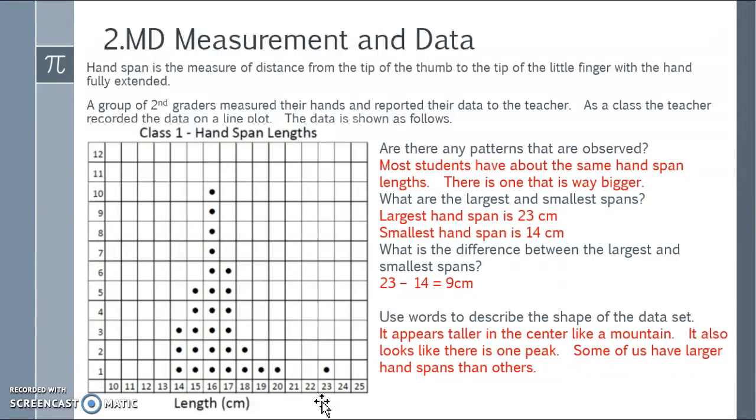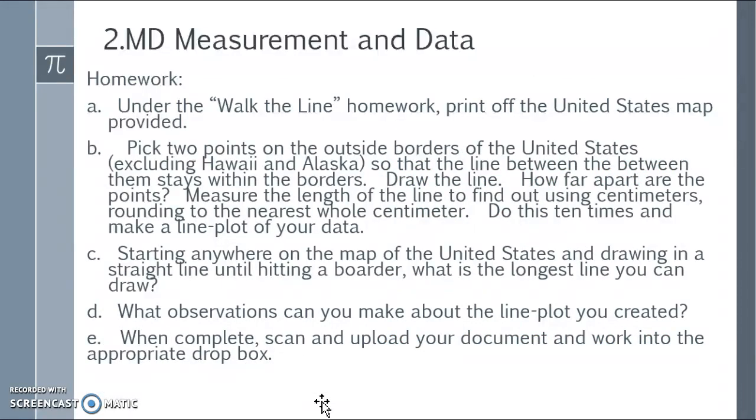Homework. Under the Walk the Line homework, print off the United States map that I have provided for you in a Word document. Pick two points on the outside borders of the United States, excluding Hawaii and Alaska, so that the line between them stays within the borders. Draw the line. How far apart are the points? Measure the length of the line to find out using centimeters.